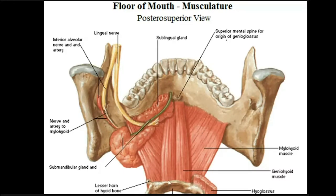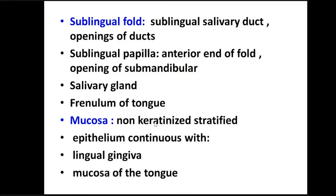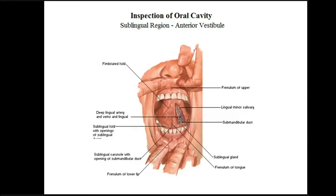There are two sublingual glands, one on each side, together with ducts and nerves supplying the tongue and the floor of the oral cavity. The mucous membrane covers the sublingual fold, which in turn covers the sublingual salivary gland. At the medial end there is a conical papilla — the sublingual papilla — which you can see in yourself with a mirror when you lift your tongue. At the summit of this papilla is a minute opening, which is the opening of the submandibular salivary gland duct. On the surface of the sublingual fold you may also see two or three minute openings of the sublingual salivary gland.